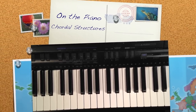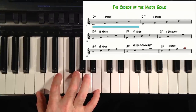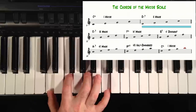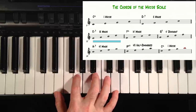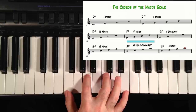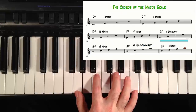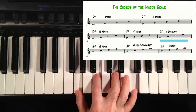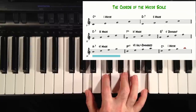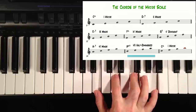In the key of C, the chordal structures are: C major — the I major. D minor — the two minor. E minor — the three minor. F major — the four major. G7 or G dominant — the five dominant. A minor — the six minor. B half diminished — the seven half diminished. Back to C major.